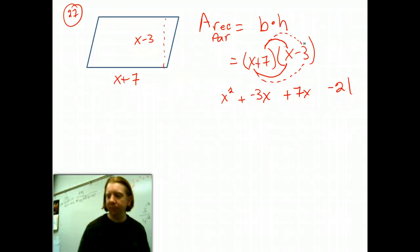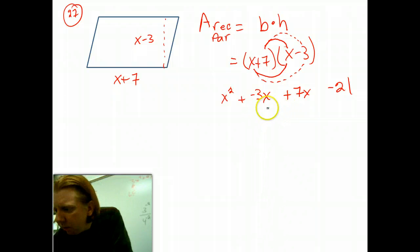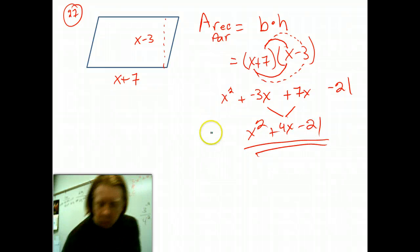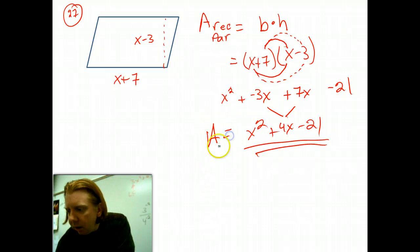Then I combine my like terms. These combine into 4x, so I'm left with x squared plus 4x minus 21. And that expression represents the area of this parallelogram.